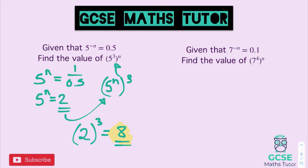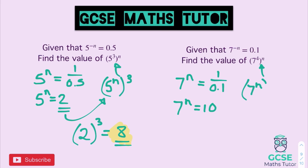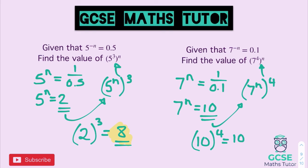For the next one: 7 to the power of negative n is 0.1, so we take the reciprocal — 1 over 0.1 is 10 — giving 7 to the power of n equals 10. Doing our power swap: 7 to the power of n, all to the power of 4. Substituting in, we get 10 in the bracket to the power of 4. 10 to the power of 4 is 10 times 10 times 10 times 10, which is 10,000.